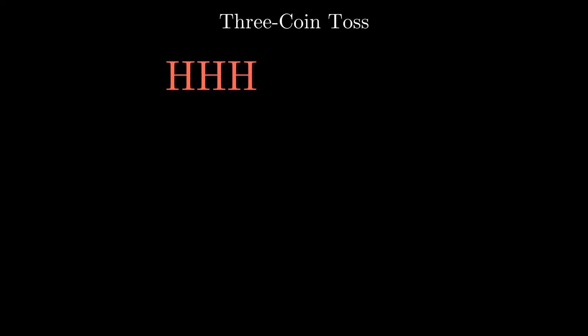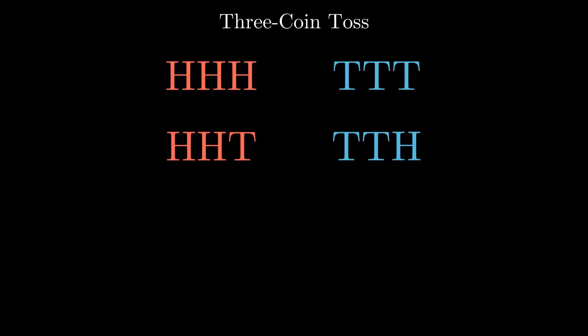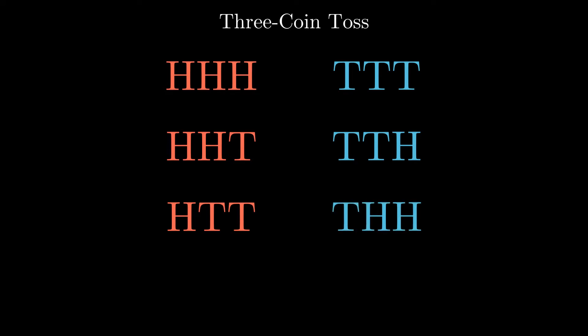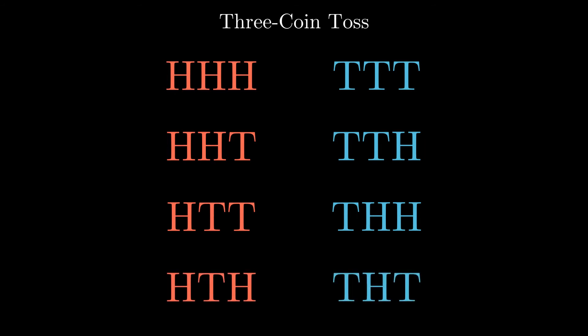A more complex example is a three-coin toss, which is the combination of three random processes of throwing a single coin. It's easy to complement each outcome — for example, three heads is the complement of three tails, or two heads then a tail is the complement of two tails and a head. Doing this leads us to find out there are eight possible outcomes for this random process.